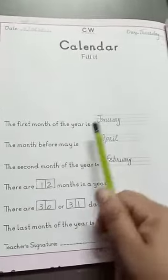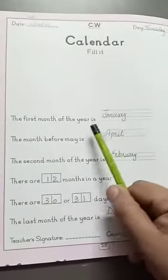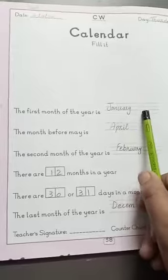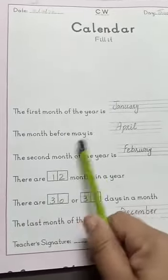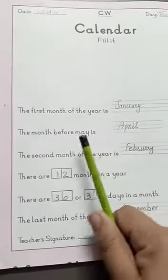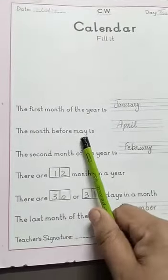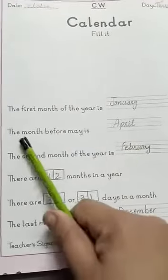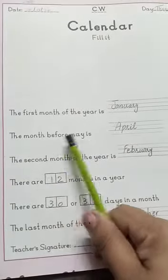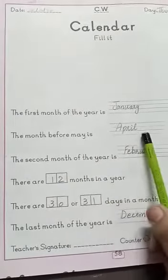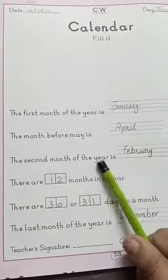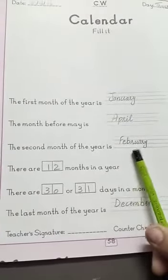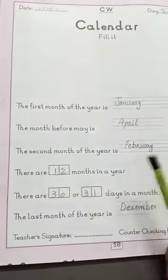The first month of the year is January. We will spell it as J-A-N-U-A-R-Y. The month before May is April — A-P-R-I-L. The second month of the year is February.